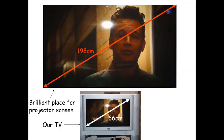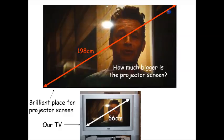The telly has a diagonal of 66 centimeters and the space for a projector screen has a diagonal of 198 centimeters, so how many times bigger will our screen be? 66 times 3 is 198, so will it be 3 times bigger?